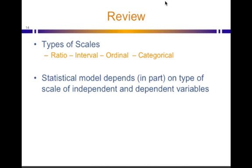In review: there are four types of scales. Ratio and interval each have the property of knowing how far apart two data points are. Ordinal only has the property of knowing the order in which data points lie. Categorical means all you know are categories. This matters because the statistical model you can make depends in part on the types of scales of your independent and dependent variables.